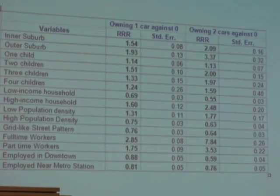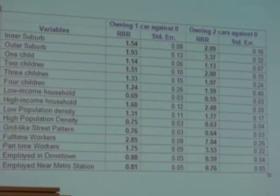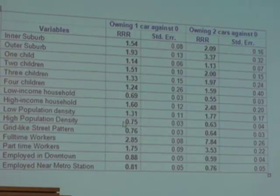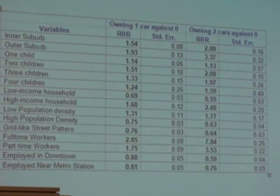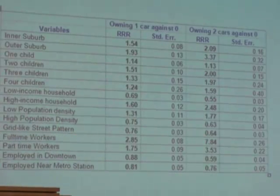Looking at density, we have taken medium population density as the base case. Low population density neighborhoods: households living there are 31% more likely to own one car rather than not owning a car, compared to households in medium-density neighborhoods. For high population density, households are 25% less likely to own a car than those in medium-density areas — computed as 1 minus 0.75 equals 0.25, or 25% less likely.